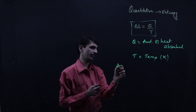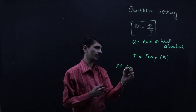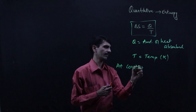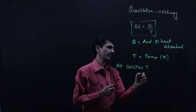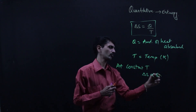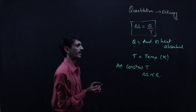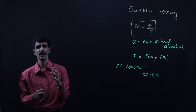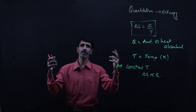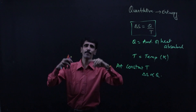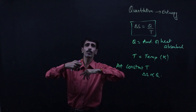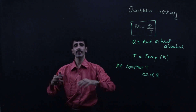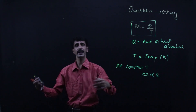At constant temperature, ΔS is directly proportional to Q. When heat is absorbed by the system, heat is a form of energy, and that energy causes the particles to go into a random state — the randomness increases, the disorder increases, and the chaos increases.